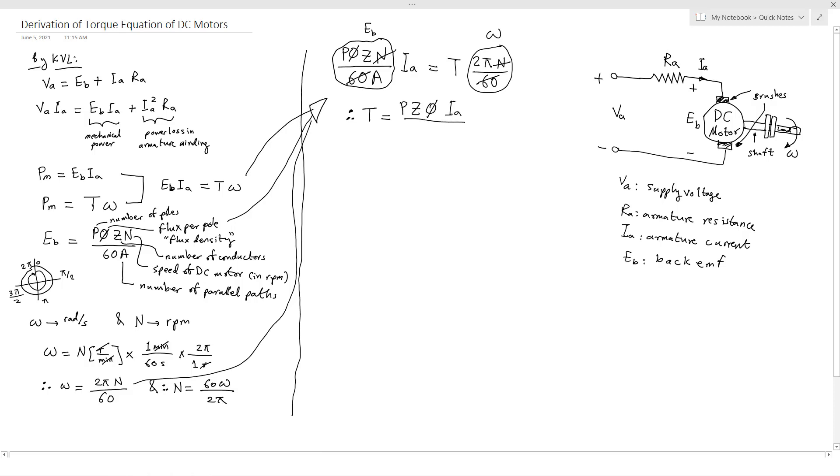The torque we so obtain is known as the electromagnetic torque of DC motor, and subtracting the mechanical and rotational losses from it, we get the mechanical torque. Therefore the mechanical torque TM will equal T minus mechanical losses.